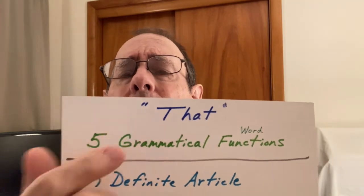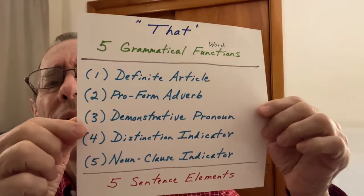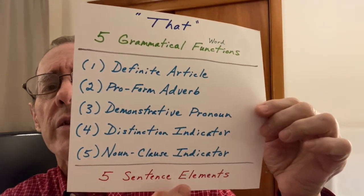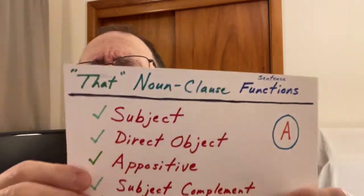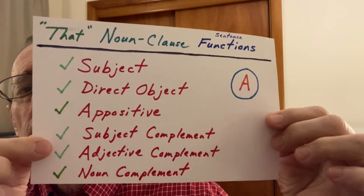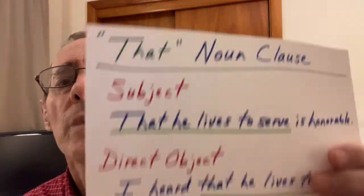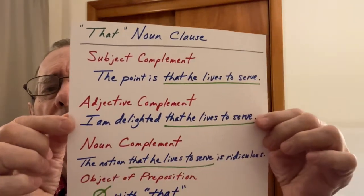To this point in this series of videos, I talked about the word 'that' and its five grammatical word functions — you could say it functions as five different sentence elements. I talked about 'that' noun clauses as sentence functions. There are six in my view. I gave examples of 'that' noun clauses in those applications — there's three, and there's three more.